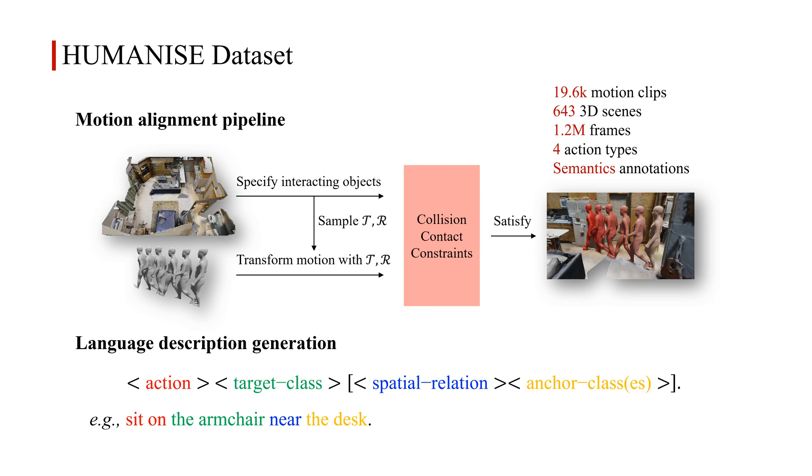The descriptions depict the action type and uniquely refer to the objects being interacted with. In total, Humanize contains about 19,600 high-quality motion sequences in 643 indoor scenes.